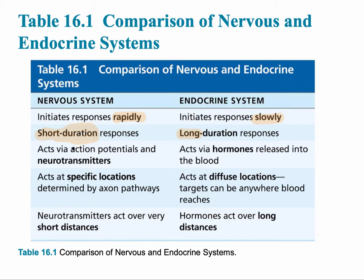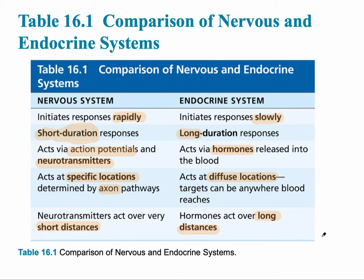The nervous system uses quick electrical impulses called action potentials and also chemicals called neurotransmitters, whereas the endocrine system uses chemical messengers called hormones released into the blood. The nervous system works at very specific pathways involving axons, but the endocrine system uses a diffuse location, releasing chemical messengers into the blood that travel all throughout the body over long distances. It's important that you can compare and contrast both systems.